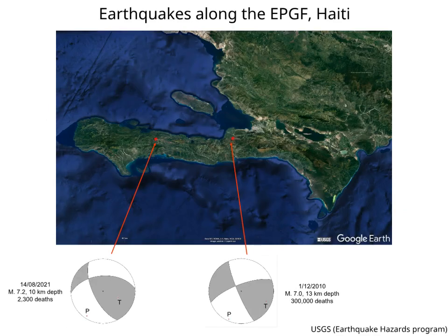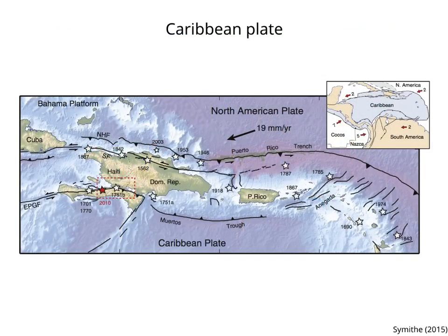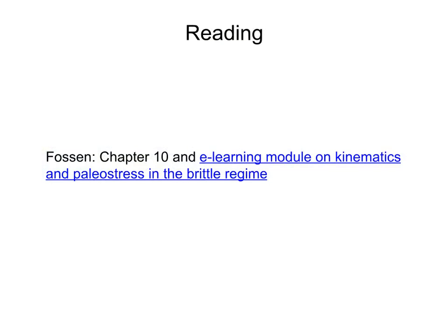These are two catastrophic earthquakes on the Enriquillo-Plantain Garden Fault System in Haiti. The 2010 Haiti earthquake is the deadliest earthquake in the 20th and 21st centuries. Can you tell from the beach ball diagrams in which direction the fault moved? The movement of the fault is left-lateral. This is consistent with the kinematics of the Northern Caribbean plate, which moves east with respect to the North American plate. To learn more about this, read Chapter 10 of Fossen and do his e-learning module on Fault Kinematics.